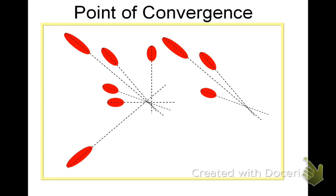Here are a couple of other examples of point of convergence. They don't always work out perfectly, but you get a general area. The point of convergence for these six blood droplets here is right in that area, and these three are right here.